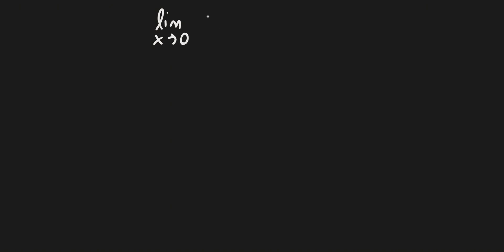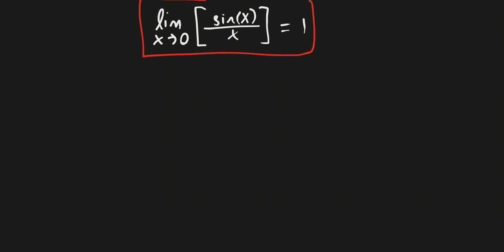In this video we're going to be dealing with the property that the limit as x approaches 0 of sine x over x is equal to 1. This is very interesting because you might be thinking it's not useful since we have only one case — sine x over x. But this can actually be used for many different cases, and I'm going to be showing you a lot of examples. Let's look at some basic ones first.